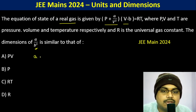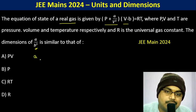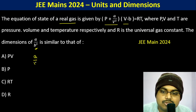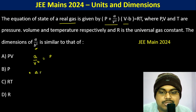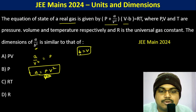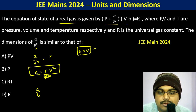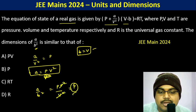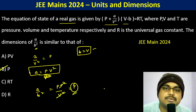Since a/V² has the dimensions of pressure, we get a = P times V squared. Therefore, a/b² equals P times V squared divided by V squared — the V squared terms cancel — giving us dimensions of pressure.